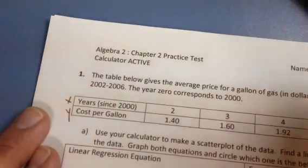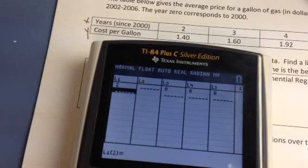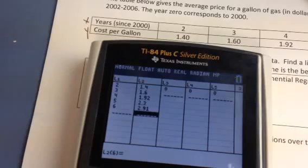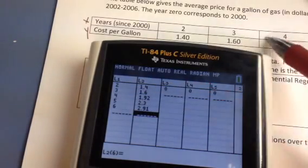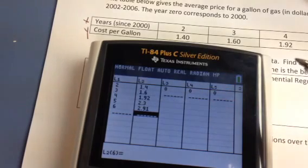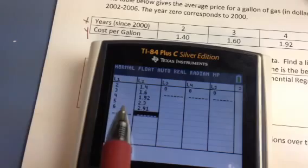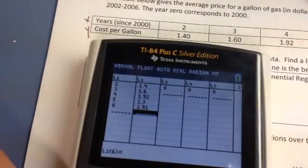So I'm going to enter my data 2, 3, 4, 5, 6 under L1 and then I'm going to scroll over to L2 and enter in my cost per gallon. When you're done make sure that all your data is correct because if this is not matching this then you're going to get the wrong answers. And on the test I won't be able to figure it out. And also make sure every L1 has an L2.